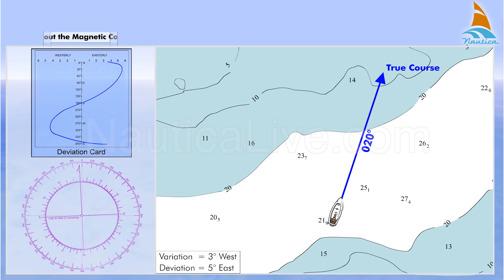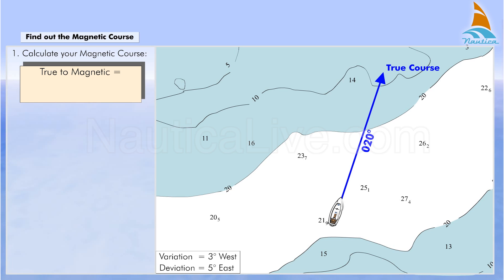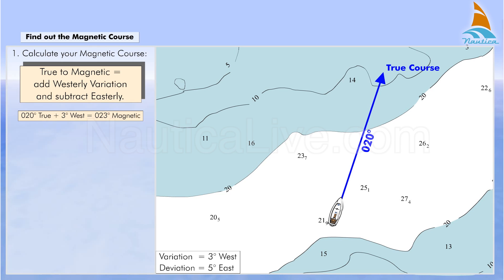To find out the magnetic course, proceed as follows. Firstly, calculate your magnetic course using the formula: true to magnetic, add westerly variation and subtract easterly. In our case, 020 degrees true plus 3 degrees west equals 023 degrees magnetic.